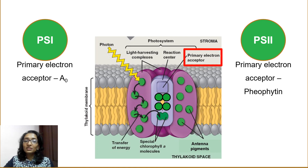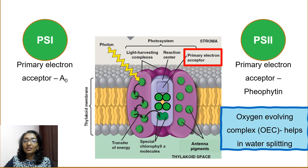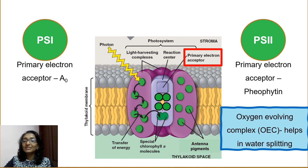PS2 also consists of an oxygen-evolving complex, which helps water to split into H-plus ions or protons, oxygen, and electrons. It is physically located on the inner side of the thylakoid membrane. In general, Photosystem I and Photosystem II work together simultaneously and continuously during photosynthesis. An important point to be noted is that Photosystem I can operate independently of Photosystem II — it is then called cyclic electron flow, which will be discussed in an upcoming lecture.